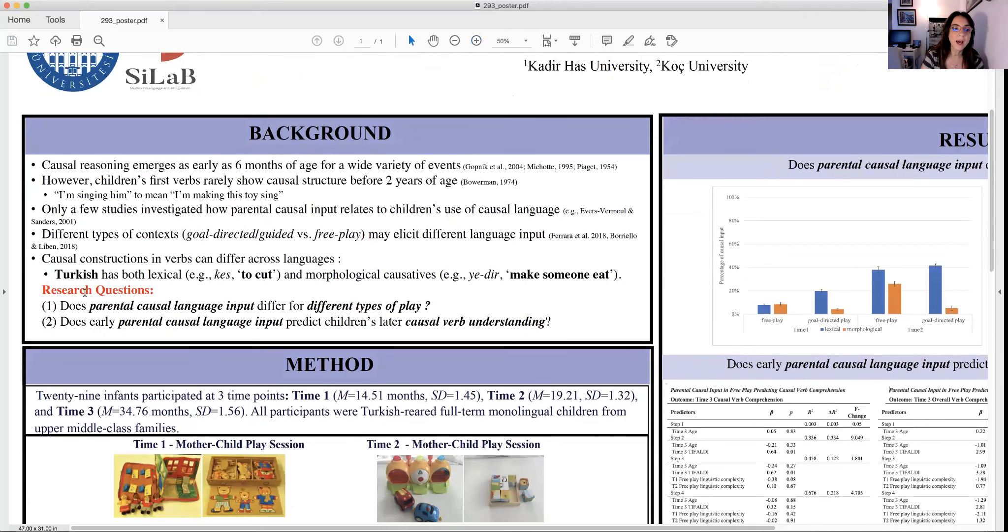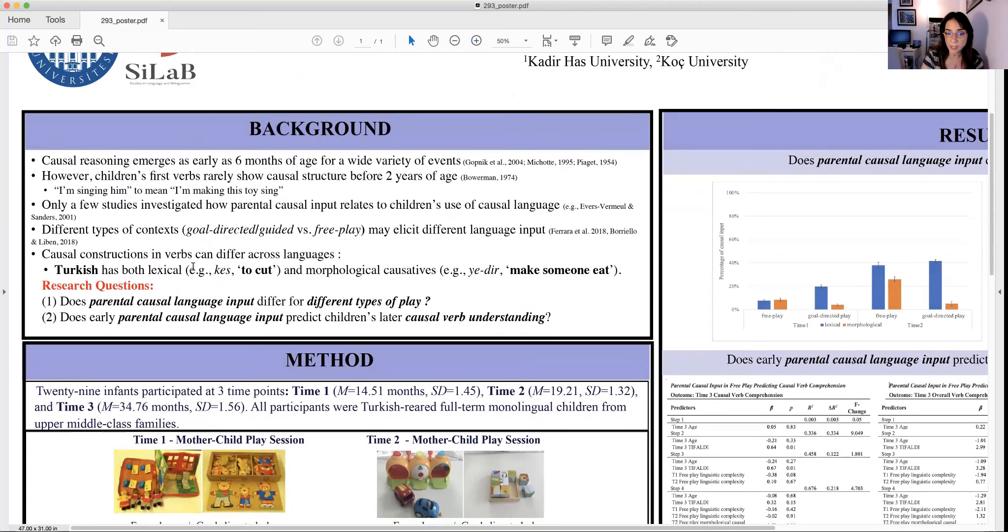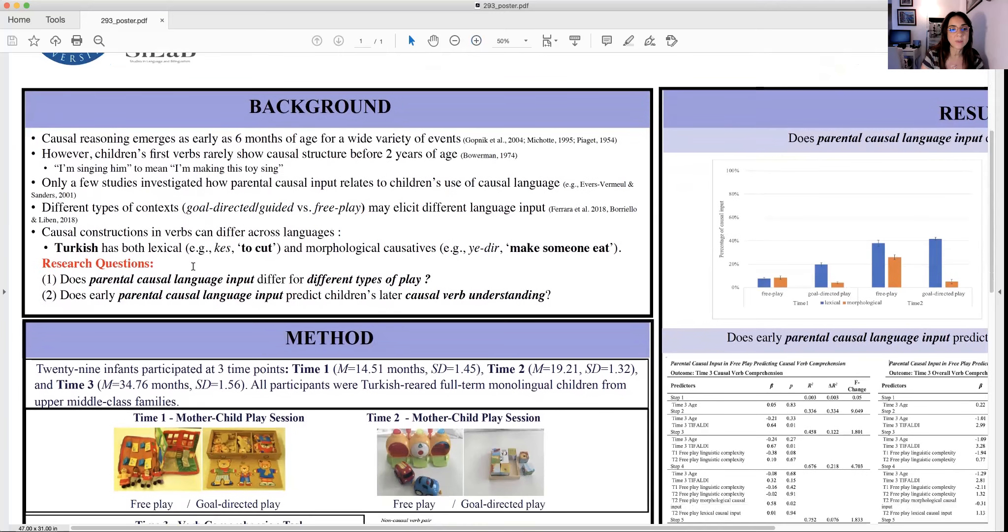We asked two research questions. Does parental causal language input differ for different types of play? And does early parental causal language input predict later children's causal verb understanding?